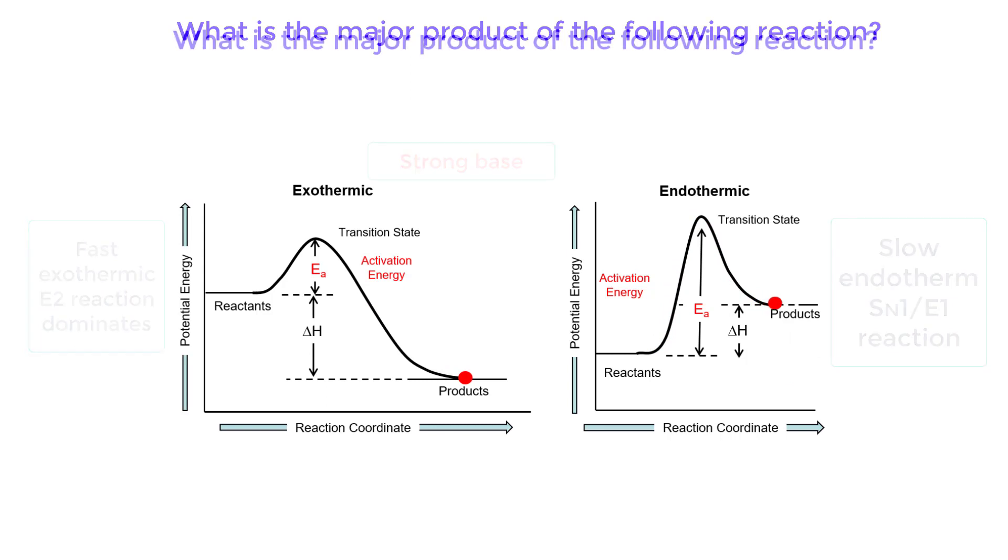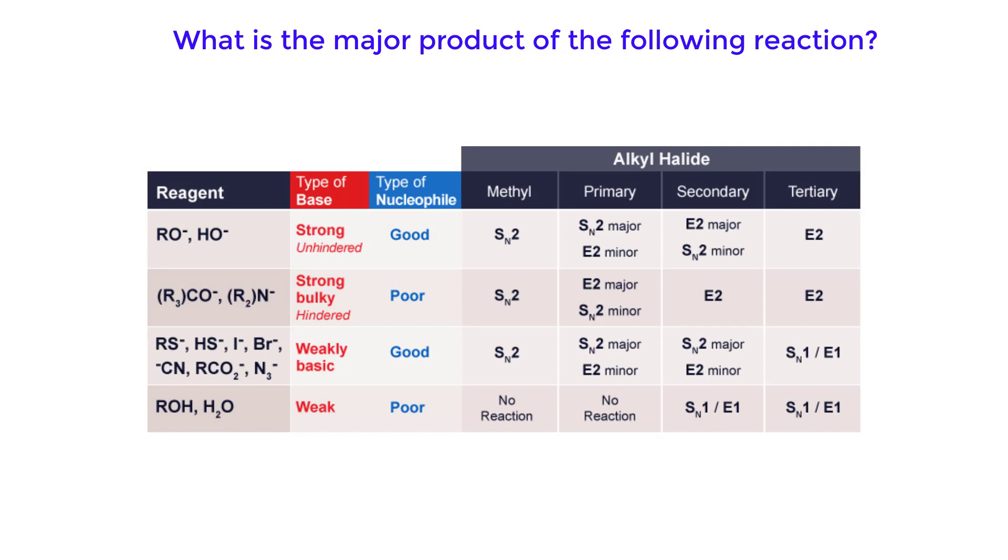Looking at the substitution elimination chart for alkyl halides, we see that t-butoxide is a poor nucleophile and a bulky sterically hindered strong base that is attacking a sterically hindered tertiary alkyl halide. An E2 reaction will occur.